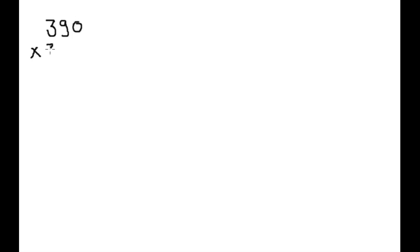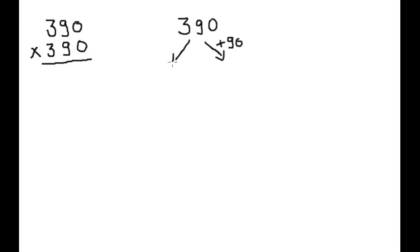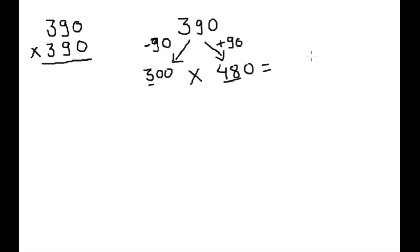The first example I am taking is 390 × 390. We will add 90 and we will subtract 90, giving us 300 and 480. Now we will multiply these. We can multiply 3 × 48, which is 144, and there are factors of 20 and 10, so there is 30 zeros — giving 144000.